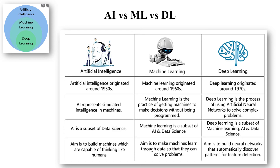This is the difference between artificial intelligence, machine learning, and deep learning. Artificial intelligence generally originated in 1950, machine learning in 1960, and deep learning in 1970. Artificial intelligence is a subset of data science, machine learning is a subset of artificial intelligence, and deep learning is a subset of machine learning. Deep learning builds neural networks that work like a human brain and learn feature detection from images. Machine learning uses data to solve problems or predict results. The combination of machine learning and deep learning makes up artificial intelligence, which builds machines capable of thinking like humans.